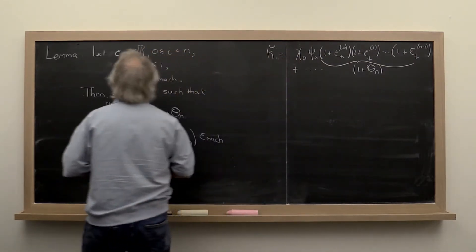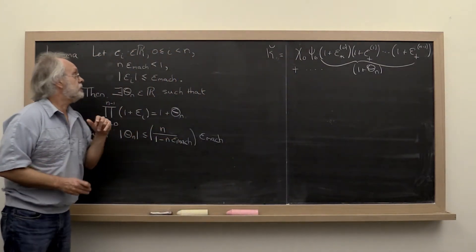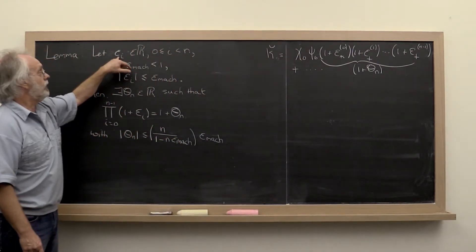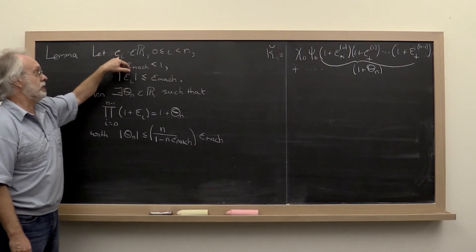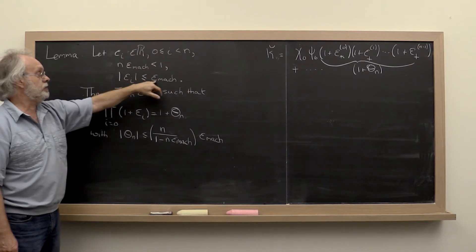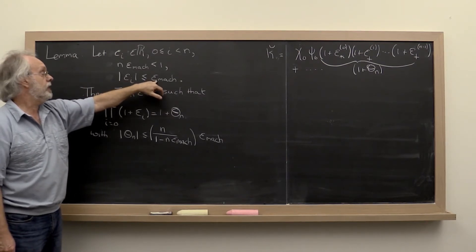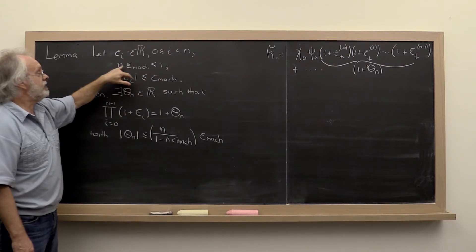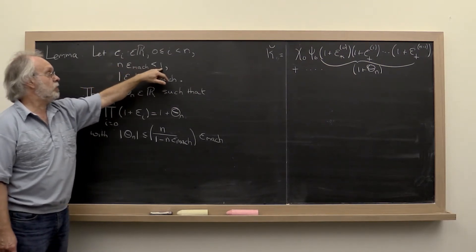So how can we abstract away from the details there? Well we can say, what if we have n epsilons, each of which is bounded in magnitude by the machine epsilon. And n is such that n times the machine epsilon is less than 1. Now that's not that much of a constraint.